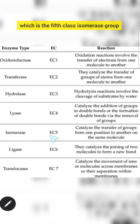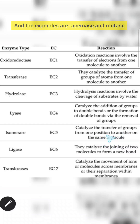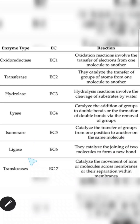The fifth class is isomerase. The isomerase group of enzymes catalyzes the transfer of a group from one position to another on the same molecule. Examples are racemase and mutase.